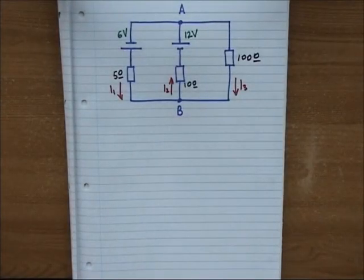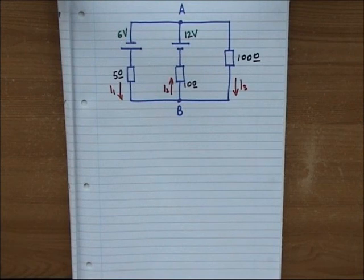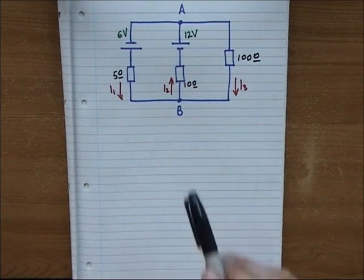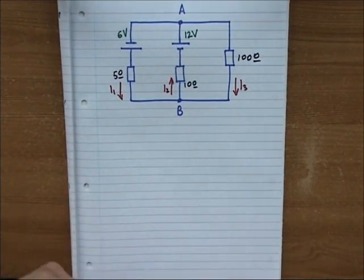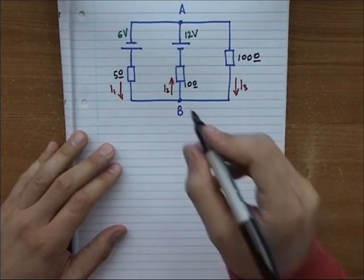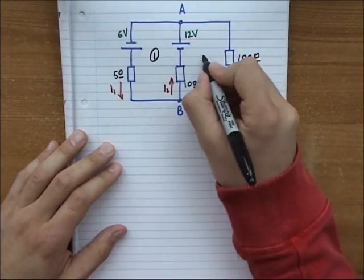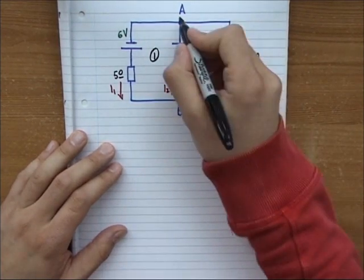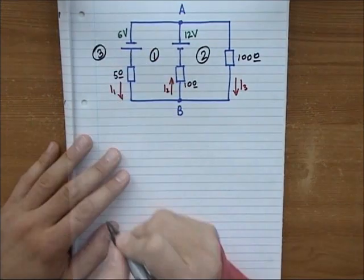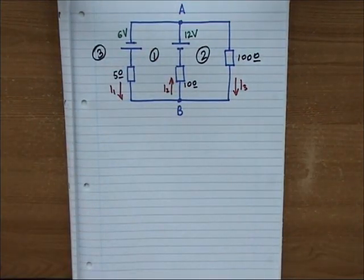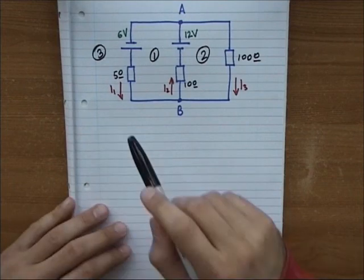Hello everyone. In this video I'm going to show you how to solve a multi-mesh circuit by using only Kirchhoff's laws. In this circuit we have two meshes: mesh one on the left, mesh two on the right, and the external one which is the third mesh. Now before we begin our solution,